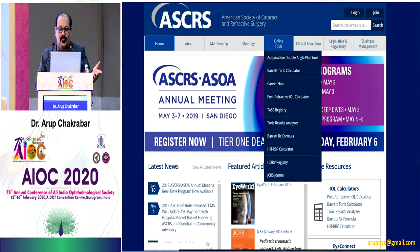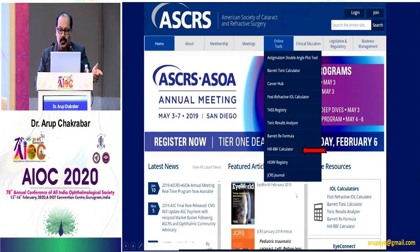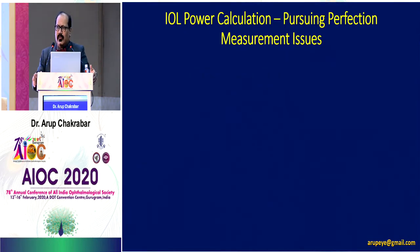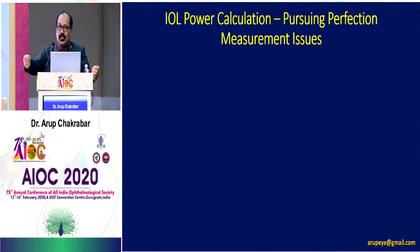The Hill-RBF formula is again a free formula available on the ASCRS.org website — under online tools in the drop-down menu. The best part of the Hill-RBF formula is that it flags off readings which are invalidated. It will tell you the formula is not able to calculate the IOL power for a particular patient, so it will not give you a false value.